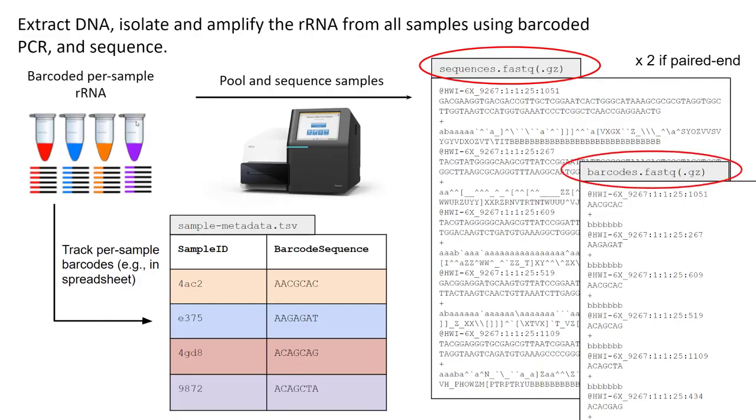For simplicity's sake, this example is just demonstrating sequences of the forward reads only, but if you have paired-end data, that is say if you've sequenced the reverse reads as well, then you will receive an additional FASTQ file that holds information on the reverse reads.